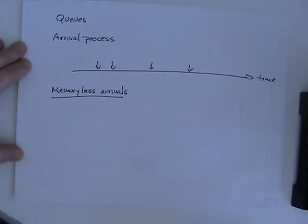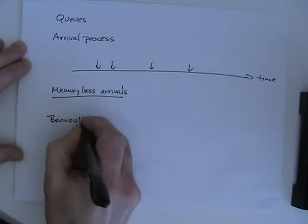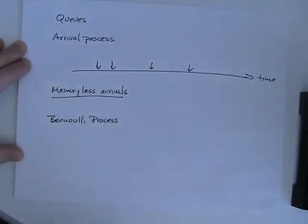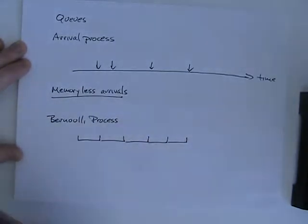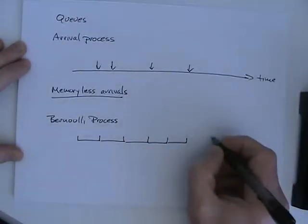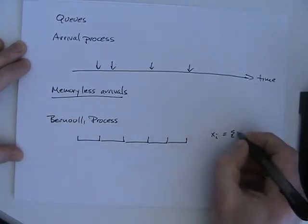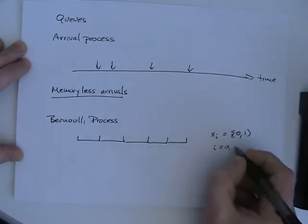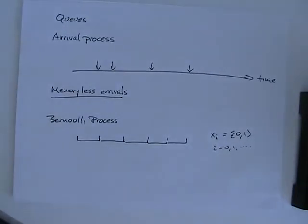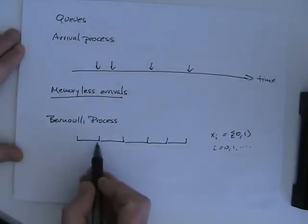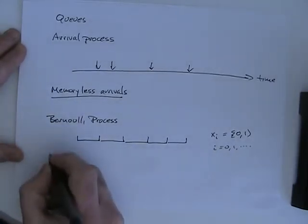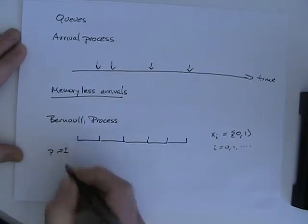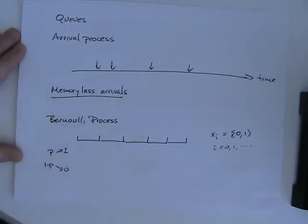The simplest arrival process like this is called a Bernoulli process. This is a discrete time process, where time is divided into slots. Formally, x sub i is either 0 or 1. A Bernoulli process picks, with probability p, a 1 (an event), and with probability 1 minus p, there's no event.